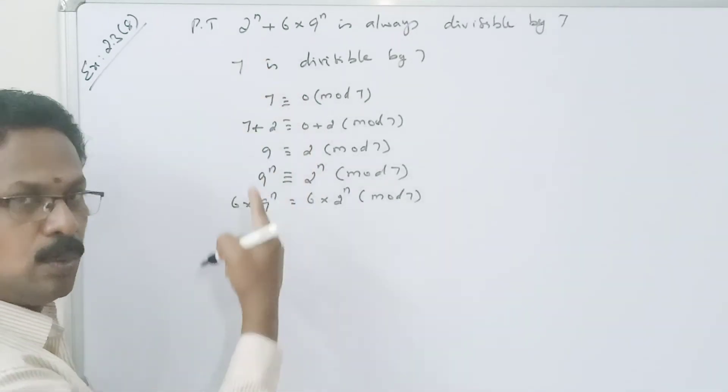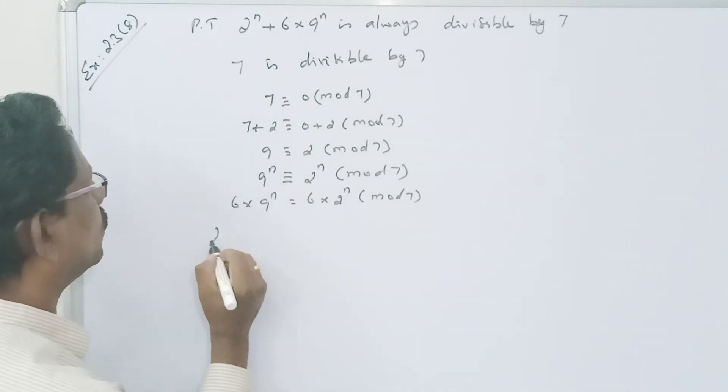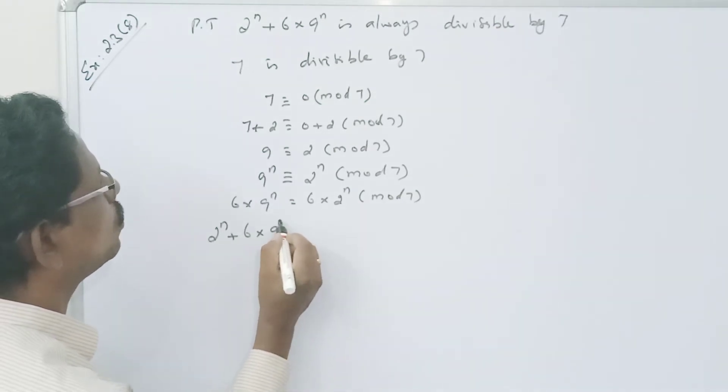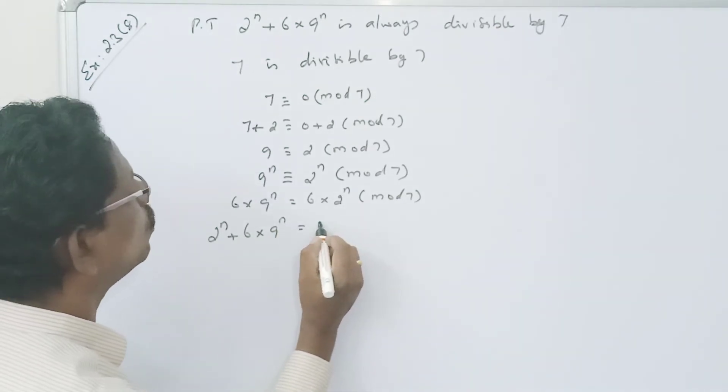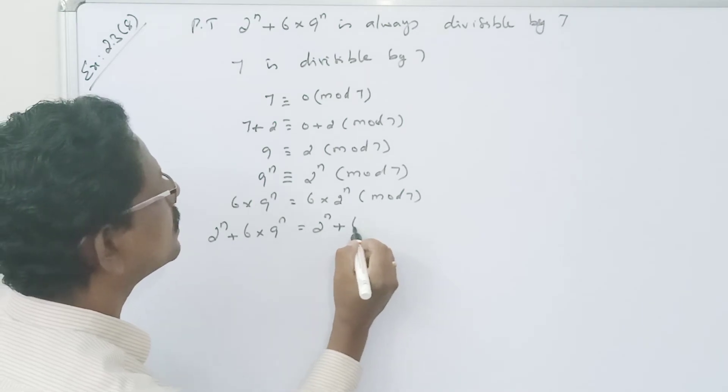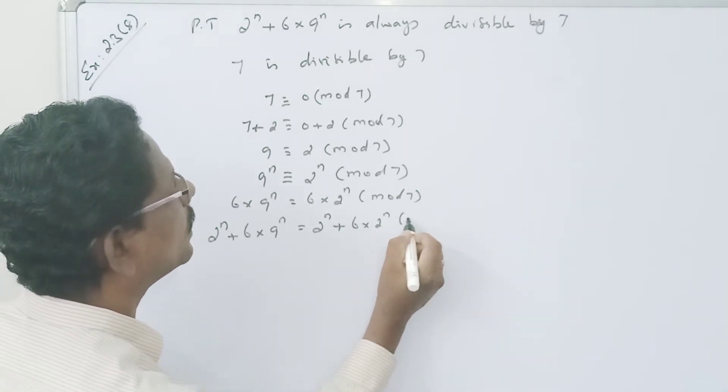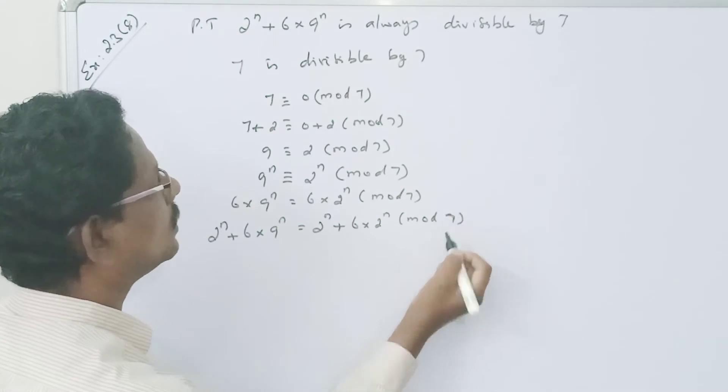Now 2 power n. So adding 2 power n. 2 power n plus 6 into 9 power n equals 2 power n plus 6 into 2 power n mod 7.